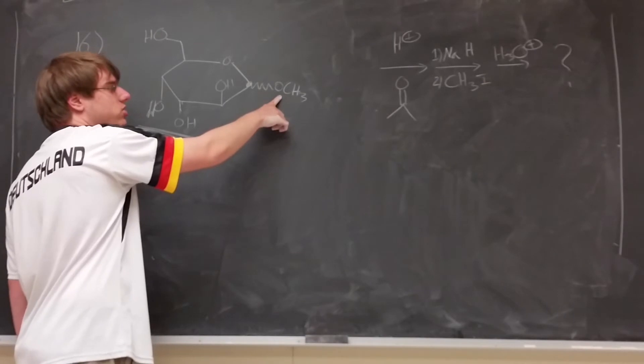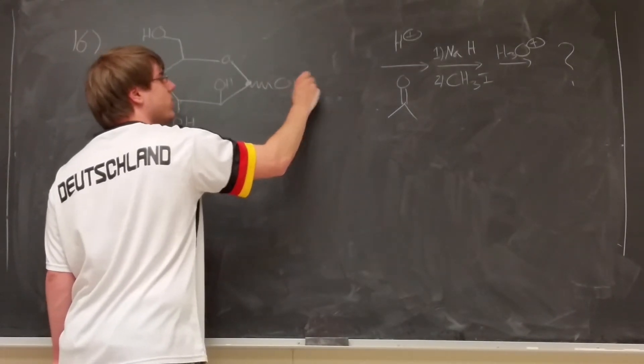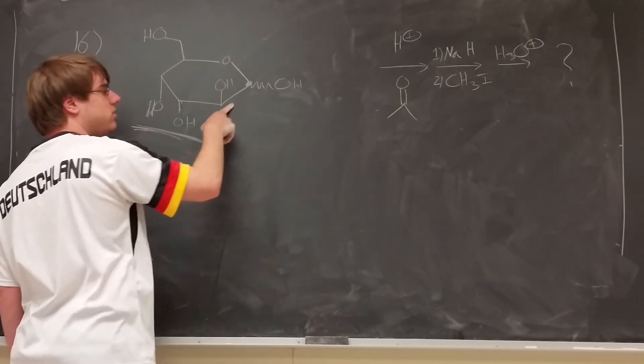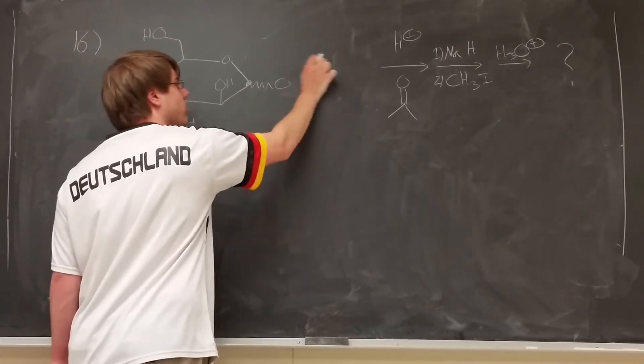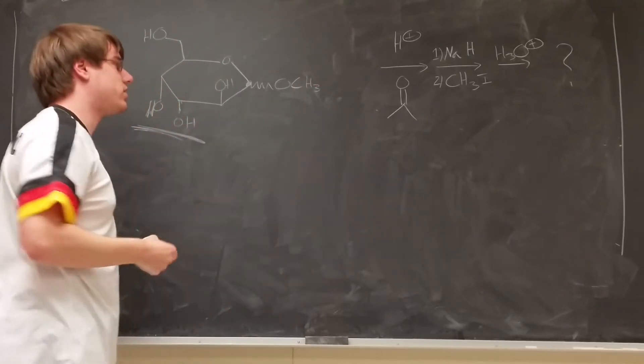But if I hadn't made this an OCH3, this was an OH that was squiggly. That means that OH is either up or down, has both possibilities. But if this was pointing up, it's right next door to another OH that's pointing up, which means this could have gotten protected as well. So there's a secret logic behind the order of events of this problem, and it's worth pointing out.